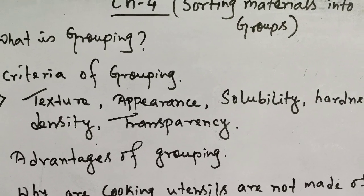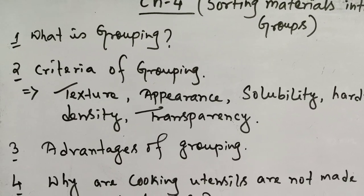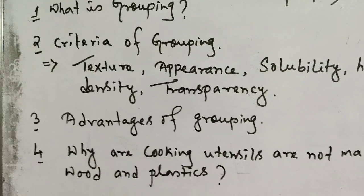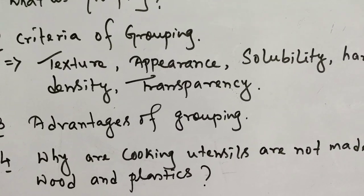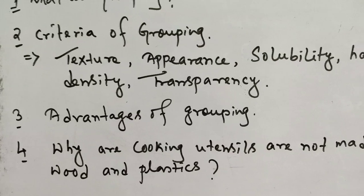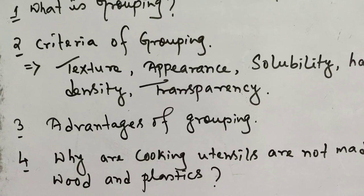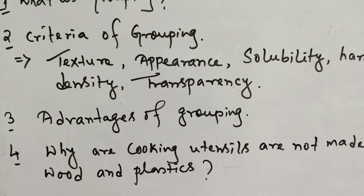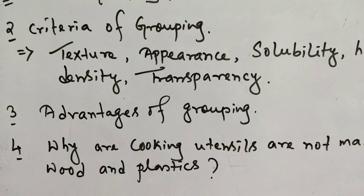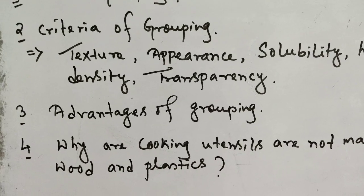The next question is: what is the basic advantage of grouping? The first main advantage is that it helps to identify objects. The next advantage is that it helps in sorting of objects, thus preventing them from getting mixed up. If objects get mixed up with one another, it becomes very problematic to identify them. Grouping prevents this mixing, which is a very important advantage.